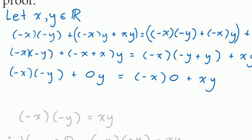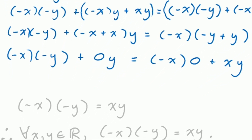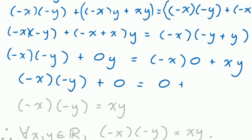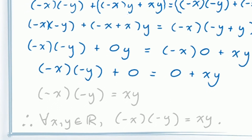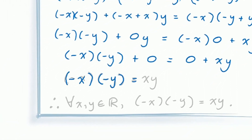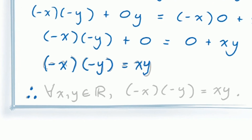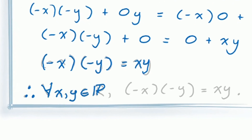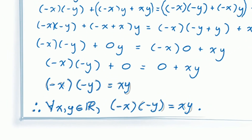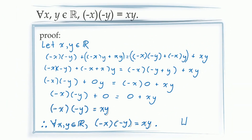This leaves us with negative x times negative y, plus 0 times y on the left-hand side, and negative x multiplied by 0, plus xy on the right-hand side. Because of Proposition 1, any real number times 0 is 0, so this allows us to reduce both sides to: negative x times negative y plus 0 equals 0 plus xy. Finally, applying Axiom A3 — that any real number plus 0 is itself — we get our result. Having completed our demonstration, we can conclude by universal generalization that this is true for all real numbers x and y. Our conclusion is exactly the same as the proposition we were trying to prove, which means our proof is complete.